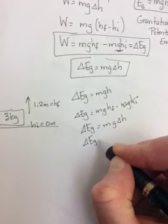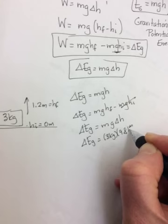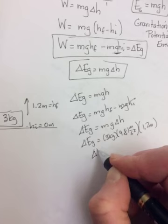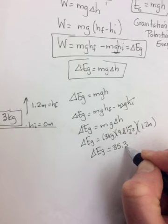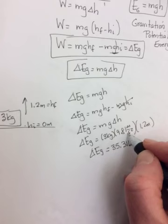Really, it's a delta H, so you could write it as delta H. Then you would do 3 kilograms times 9.81 meters per second squared times the 1.2 meters. Delta EG will be equal to, I think you get 35.316, it's still energy, kilogram meters per second squared.